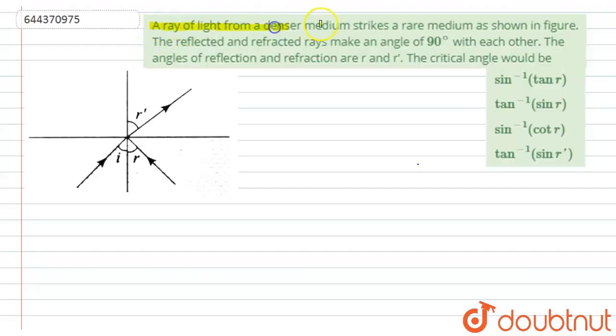A ray of light from a denser medium strikes a rare medium as shown in the figure. The reflected and refracted rays make an angle of 90 degrees with each other. The angles of reflection and refraction are r and r dash, then we have to find here the critical angle.